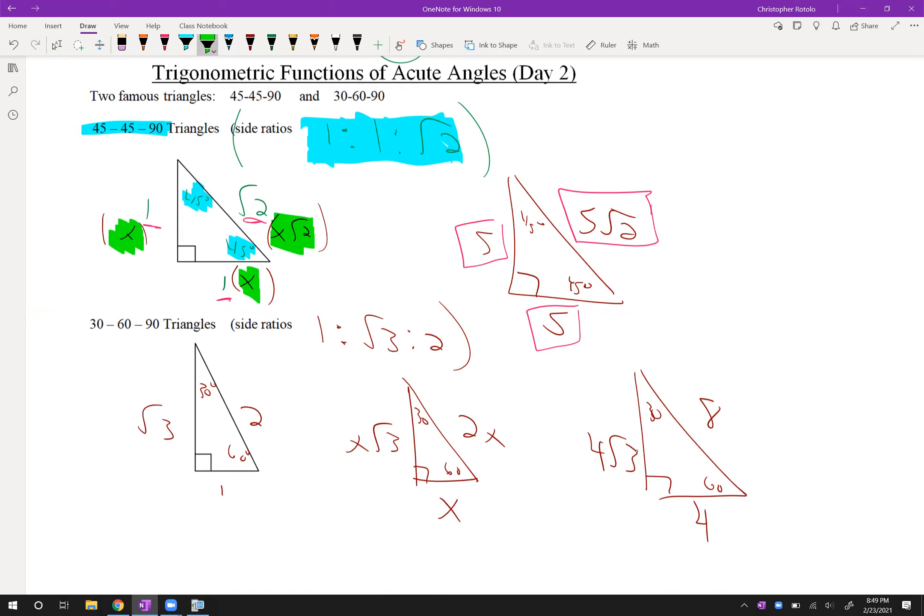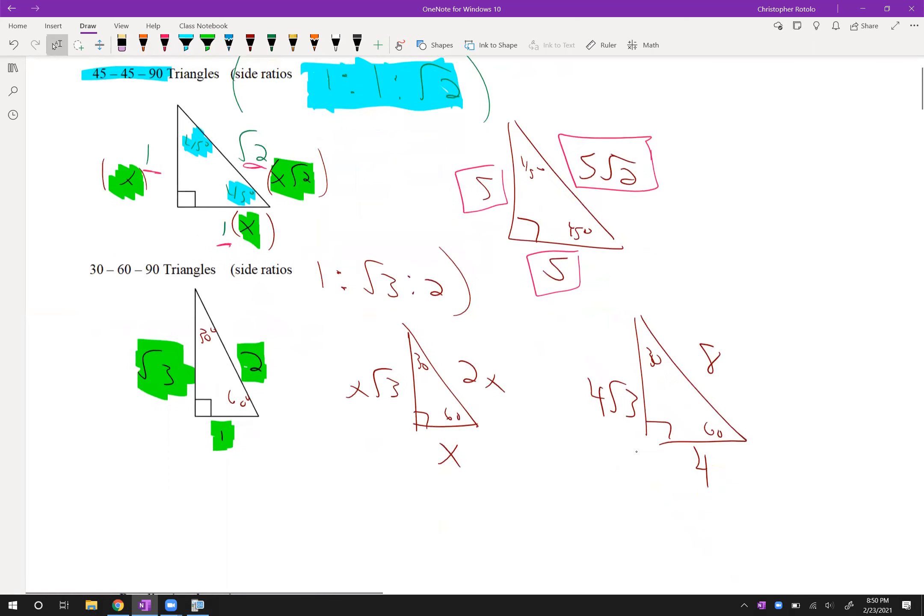The next one, 30-60-90. So 1, root 3, and 2. I'm going to go in that order. So 30 correlates to the 1. 60 is the root 3, and then of course the hypotenuse being the largest number turns out to be 2.